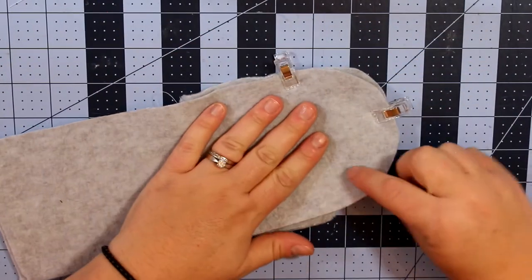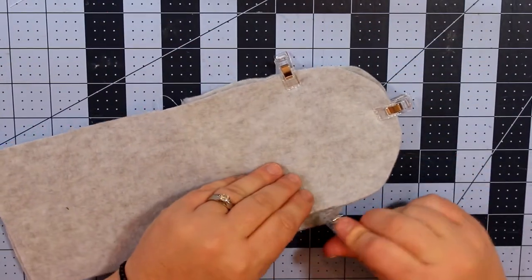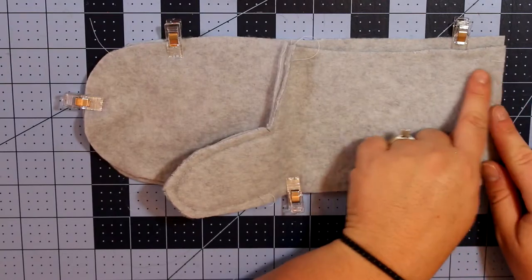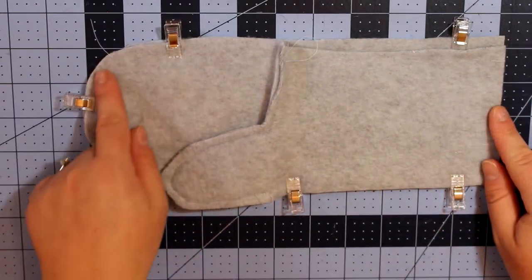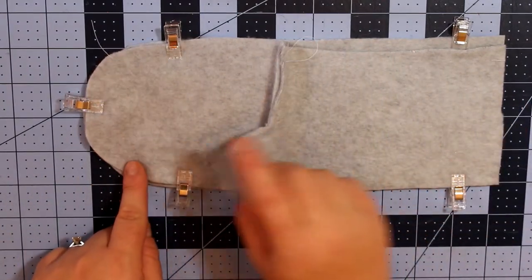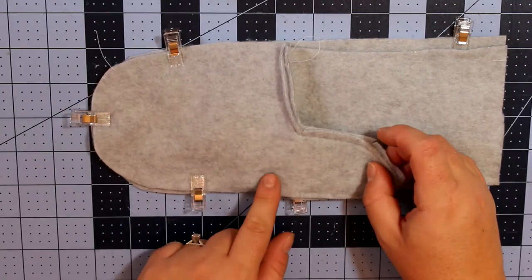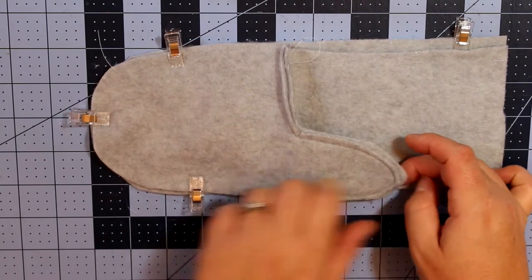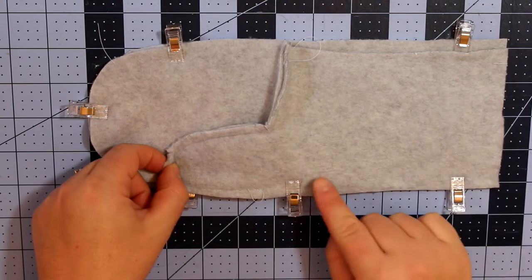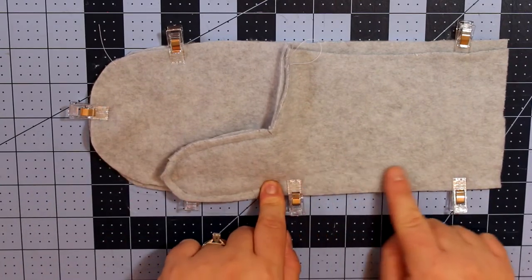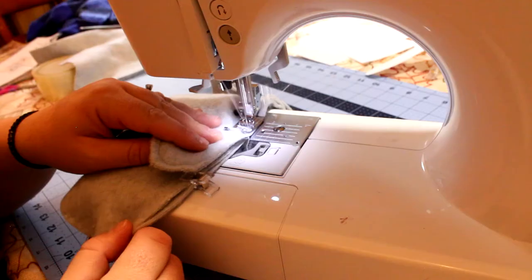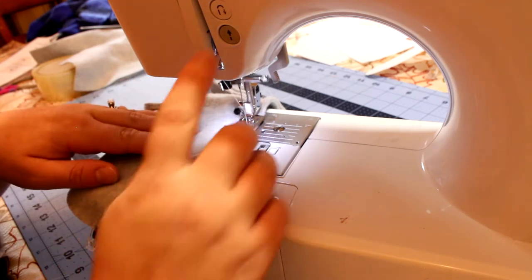Then I will show you how to sew it. It's a little bit different, but still very easy. So I'm going to sew all the way down the one side and around the fingertips until you run into the thumb. And then I'm going to stop and lock my stitches, and then I'll flip the thumb over and then continue on.